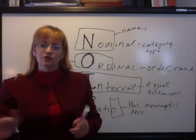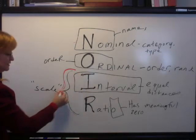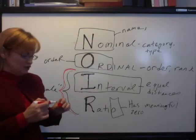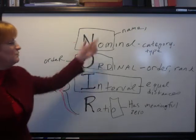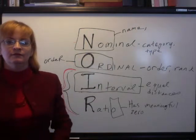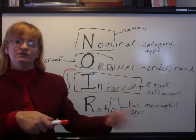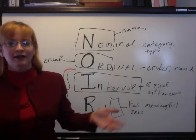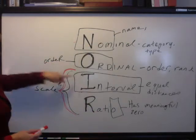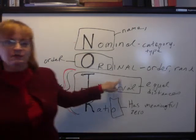That only works if your dependent variable is measured as a scale variable — it has to either be interval or ratio. Think about it: what if you have apples, oranges, peaches, and pears as your dependent variable? How are you going to put those on a number line, compute a mean, compute your deviations, and figure out mean squares? You can't, because you can't do an F test or an ANOVA on nominal data. It has to be at least interval or ratio, with equal intervals between items.